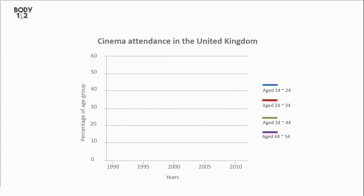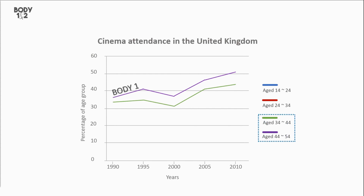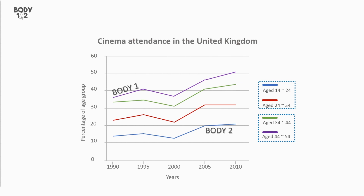Moreover, this is how we will divide this line graph to write body 1 and body 2. We will write the two oldest age groups — people aged 34 to 54 — in body 1, and the two youngest age groups — people aged 14 to 34 — in body 2.